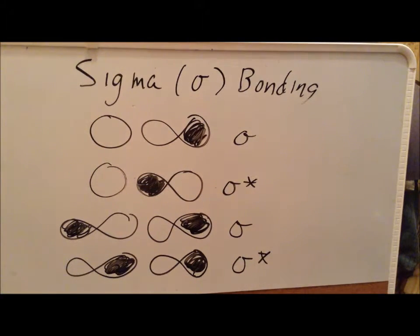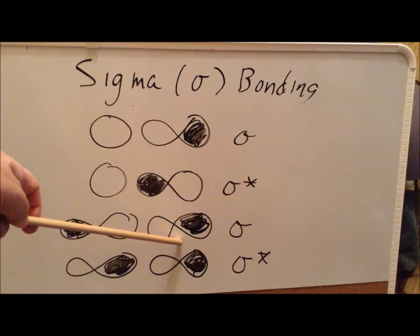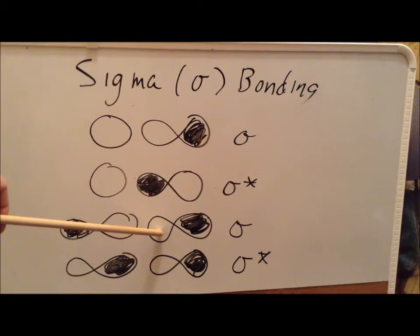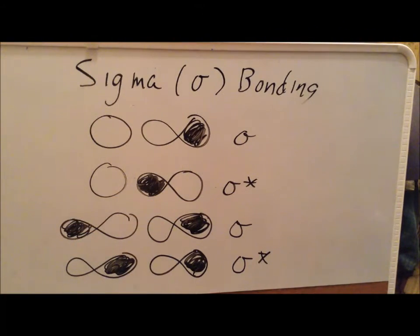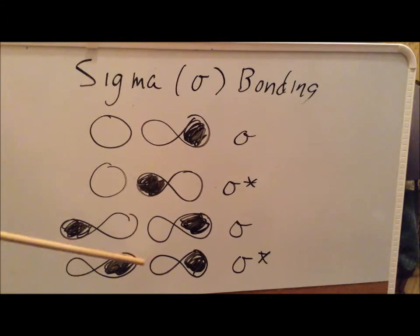We can also have a p orbital on one atom and a p orbital on another atom interact to form a sigma bond. The open lobes face each other — that's where they overlap — giving us a sigma bonding orbital. On the other hand, if we reverse the phases so the filled part is next to the open part, that gives us a sigma antibonding orbital.